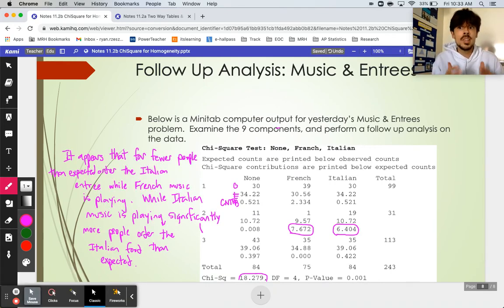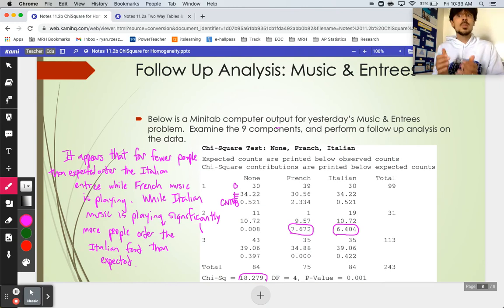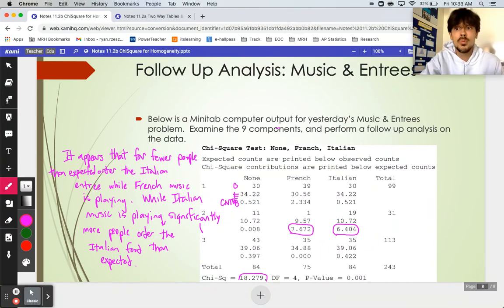But the biggest difference or the biggest discrepancy was actually in the Italian entree. When French music was playing, only one person ordered Italian food. So actually, that seems like maybe the French music turned people away from the Italian entree. And then when that Italian music was playing, we did get many more people who actually ordered it than expected. So putting that into words, I'll write something down on the side so you guys can have a good model. But that would be a good stopping point for this video. All right, so again, the idea here is that we're just looking at making a decision about some of the larger contributions in our problem. I picked the biggest two. Those are the most responsible for our reason to reject H₀ and for our reason to say there actually is a difference in the distribution of our variables.